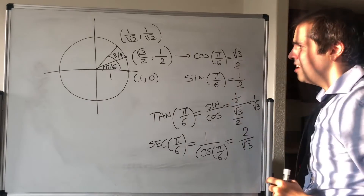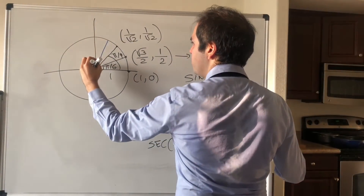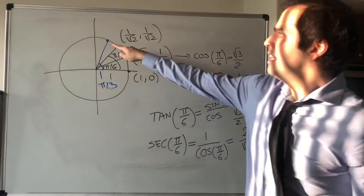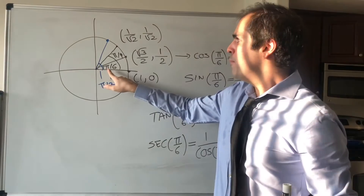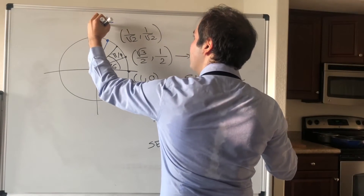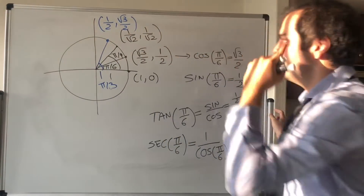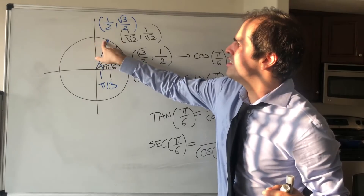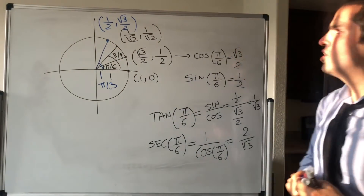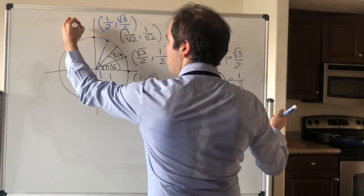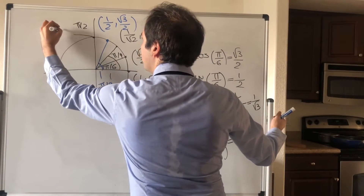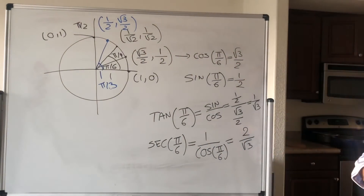How about pi/3? Notice what is happening: the y-coordinate is very big but the x-coordinate is small, which means the values are switched. So the point is (1/2, √3/2). The sine is very close to 1 so it has to be √3/2, whereas the cosine is pretty small so it has to be 1/2. And then at pi/2, the x-coordinate is 0 and the y-coordinate is 1, so cosine of pi/2 is 0 and sine of pi/2 equals 1.